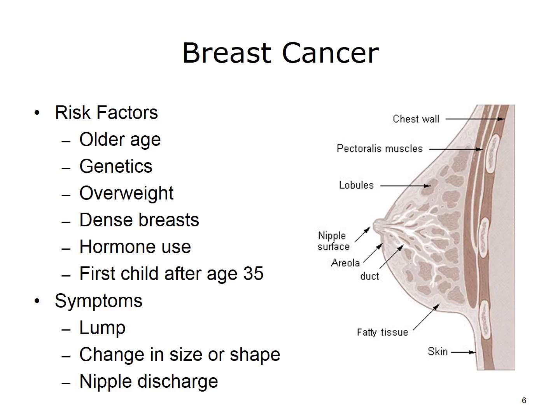Breast cancer affects one in eight women during their lives. Risk factors include age – the chance of getting breast cancer increases as you get older. Another risk factor is genetic inheritance. The genes BRCA1 and BRCA2, if present, greatly increase your risk. Personal factors such as beginning the menstrual cycle before age 12, or going through menopause after age 55, also increase likelihood. Additional risk factors include being overweight, having dense breasts, using hormone replacement therapy, taking birth control pills, drinking alcohol, not having children, or having your first child after age 35.